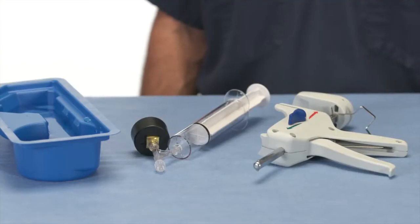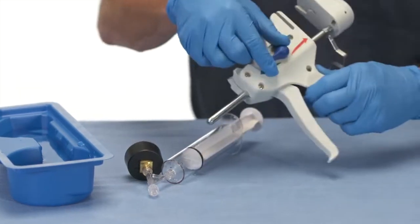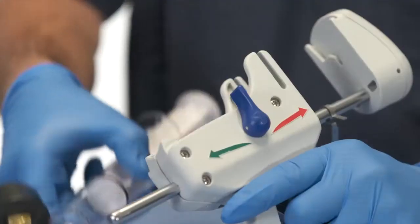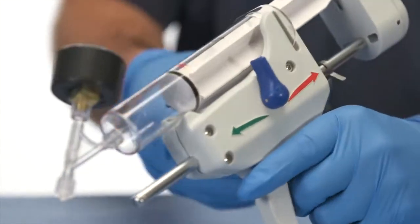Turn the lever on Alliance 2 Inflation System Handle upward to the neutral position. Snap the syringe into both fin slots on the handle.